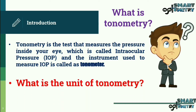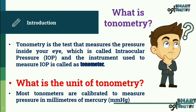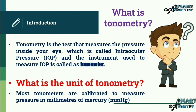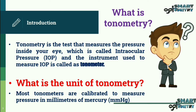What is the unit of tonometry? Most tonometers are calibrated to measure pressure in millimeters of mercury (mmHg).